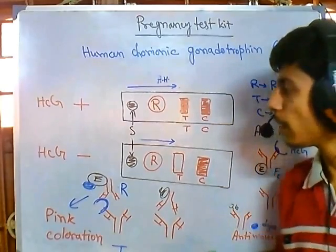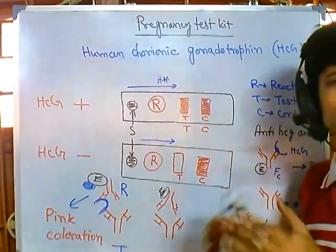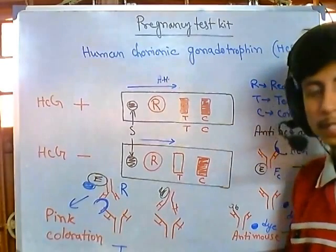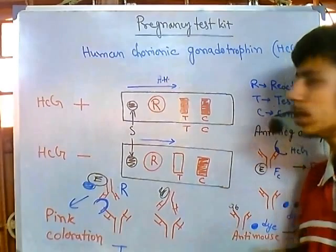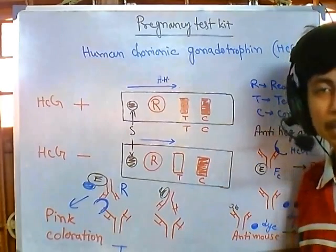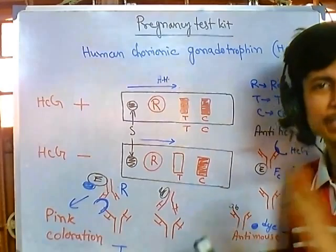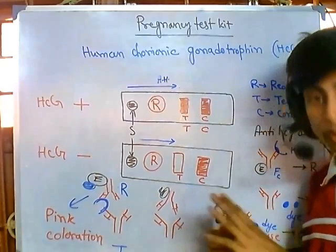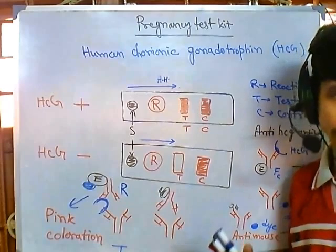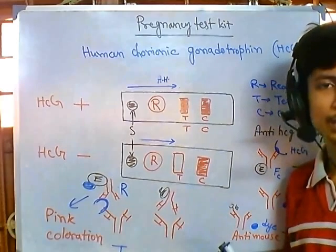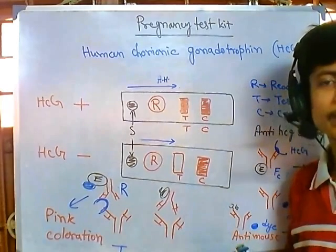This whole process is a somewhat crude way of determining pregnancy. The presence of HCG in blood is the best method, but the home pregnancy test kits available are approximately 95% to 98% accurate. The high concentration of HCG in urine definitively indicates the presence of pregnancy. That's how the pregnancy test works — thank you guys.